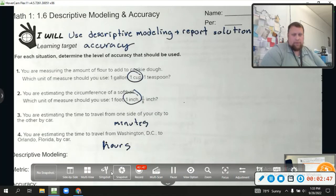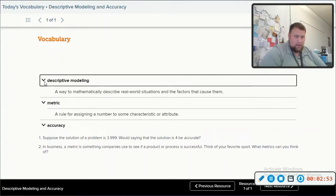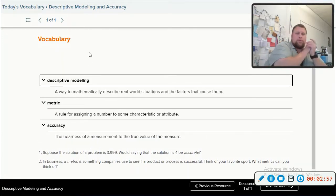All right, let's go ahead and move on to our vocab today. Take a minute and pause this if you need it. I'll just talk you through descriptive modeling as a way to mathematically describe real-world situations and their factors that cause them. Metric is a rule for assigning a number to some characteristics, or... Gosh, I have to look over at my other paper. That's hilarious. Or what? The reason why is there's a big line that goes through my computer. You can't see it, but I can. And it blocks everything. Rule for assigning a number to some characteristics. Or what? Or attribute. Wow, what a weird section of this video.